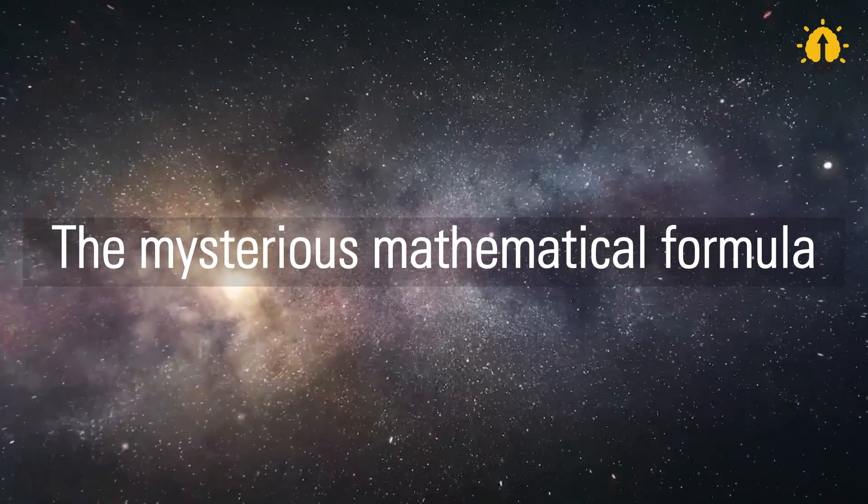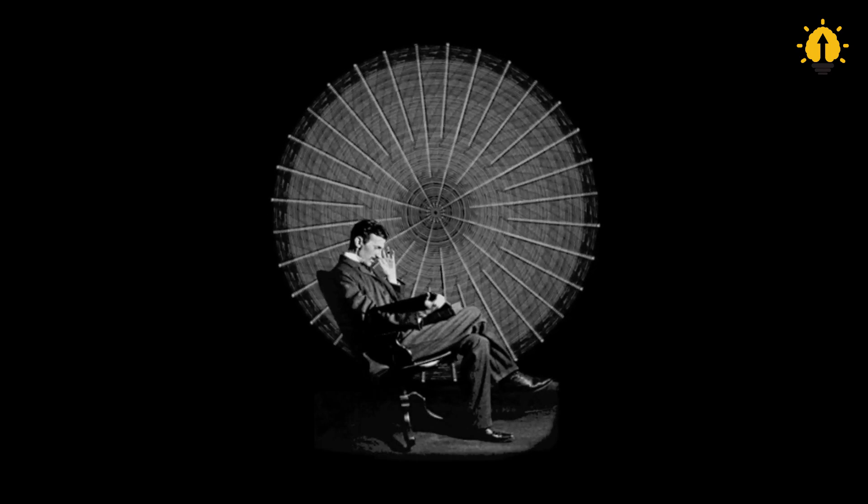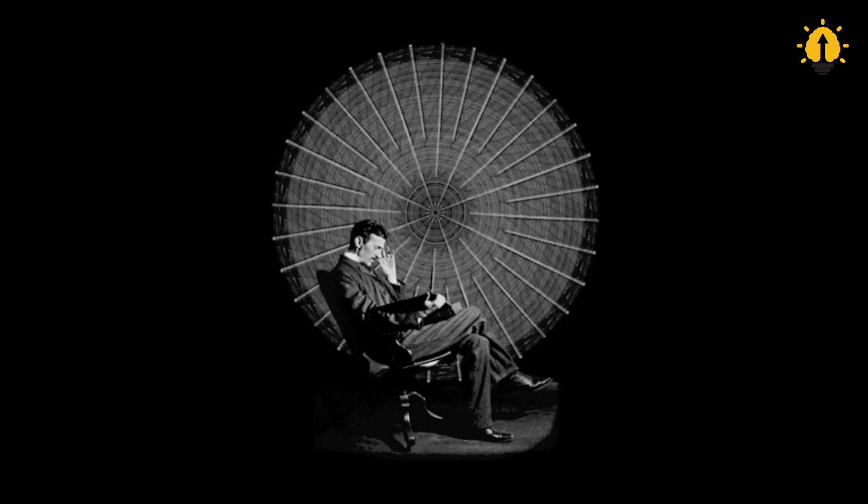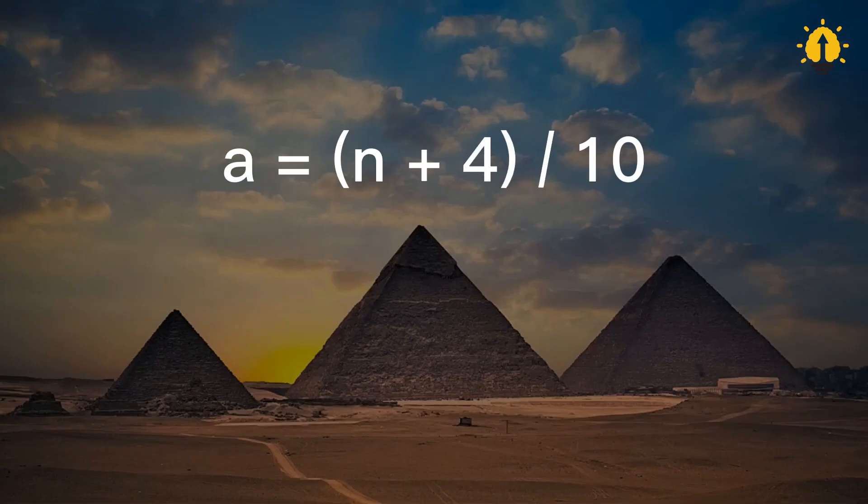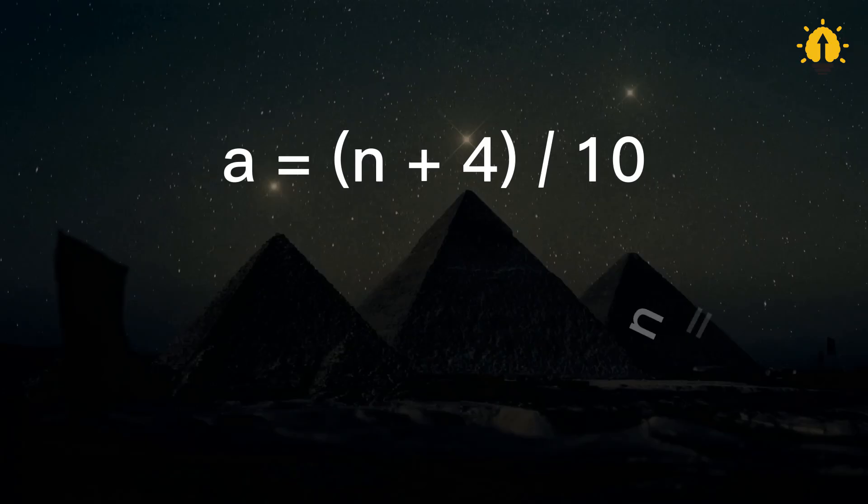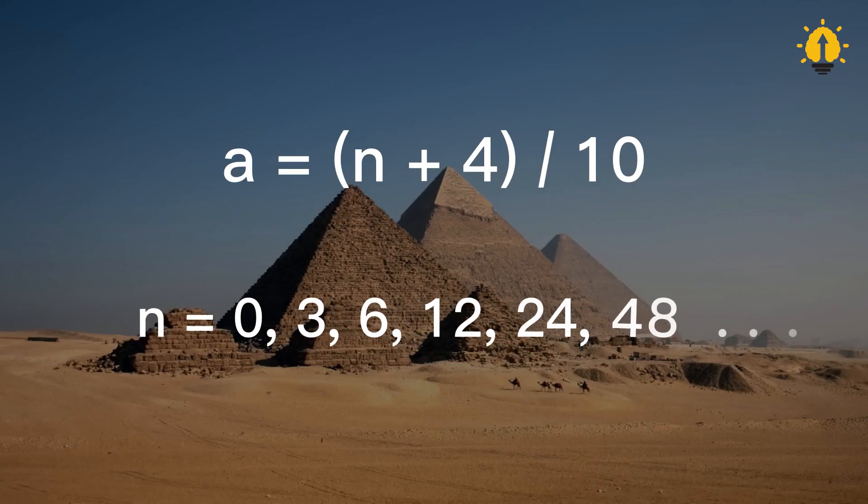The mysterious mathematical formula has baffled astronomers and mathematicians alike for centuries. It can be expressed as a equals n plus 4 over 10, where n equals 0, 3, 6, 12, 24, 48, and so on.